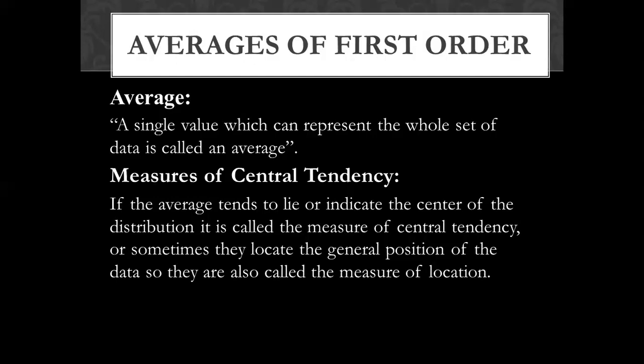If we have calculated an average, it will indicate the center of the distribution. We will call it Measures of Central Tendency. The average is the exact center of the data point — that value will be relevant to the center of the data.